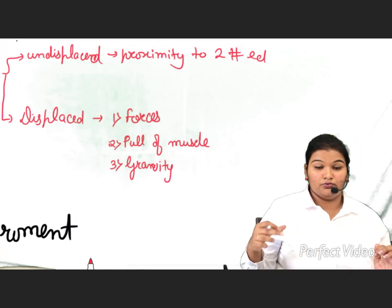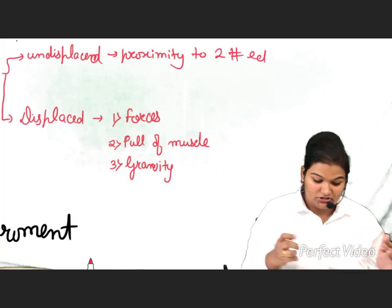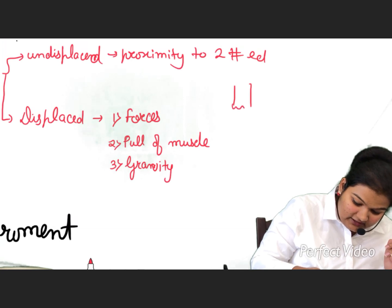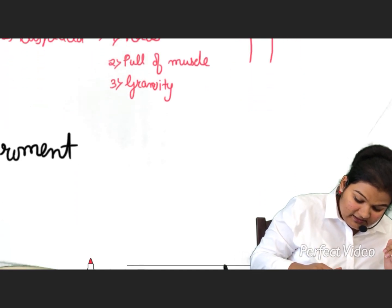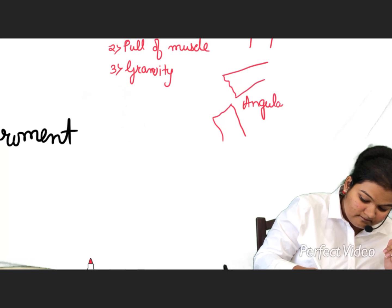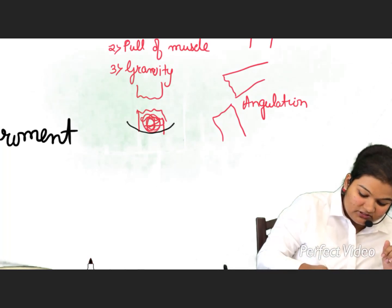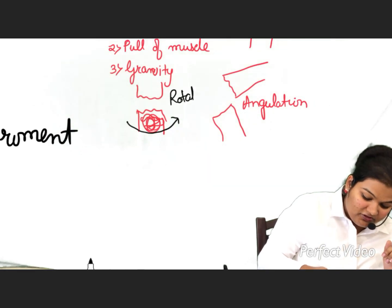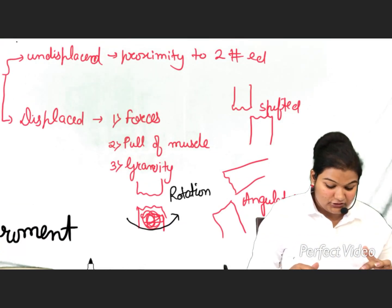We describe displacement of fracture in terms of shift, angulation, and rotation. Here we have the two fracture ends that are shifted. Then we have angulation, where the fracture ends form an angle. And then we have rotation, where the bone is rotated. These are the three types of displacement.